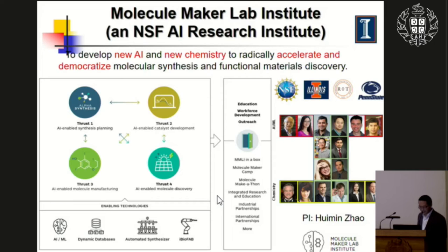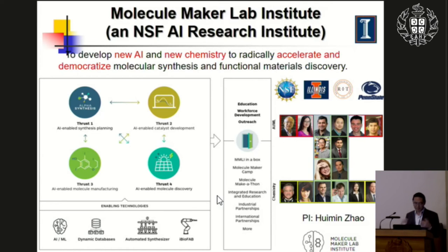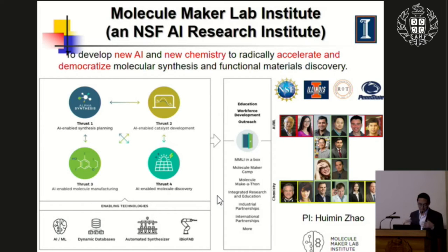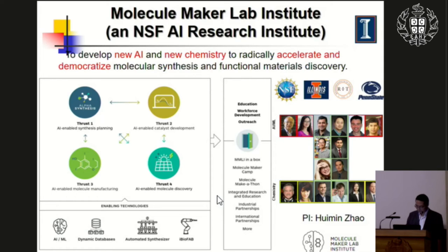In this institute, we have more than 17 PIs from different departments — half from CS, the other half from chemical engineering and chemistry. We try to develop AI tools for synthesis planning and optimizing catalyst performance — whether chemical catalyst or enzymes — to synthesize chemicals like drugs in a high-throughput manner. We also try to develop new workforce education modules.